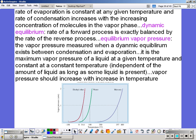The equilibrium vapor pressure is the vapor pressure measured when the dynamic equilibrium exists between condensation and evaporation. It is the maximum vapor pressure of a liquid at a given temperature, and constant at a constant temperature. So it's independent of the amount of liquid, as long as some liquid is present. Vapor pressure should increase with an increase in temperature then.